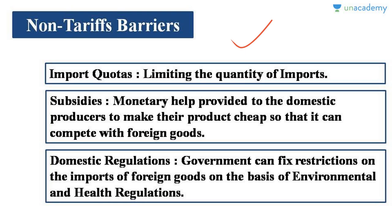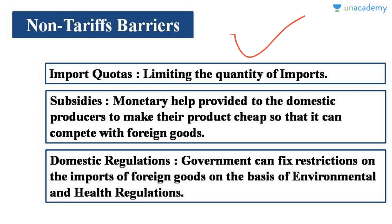For example, if the government limits the number of iPhones imported to India to 1 lakh, but the demand is 2 lakh, then demand is more and supply is less — the price will automatically go up. Another non-tariff barrier is subsidies. The government can provide monetary help to domestic producers whose high production costs would otherwise make them unable to compete with foreign goods.